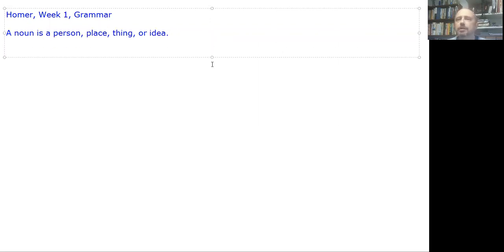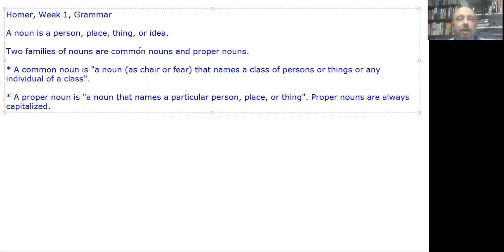You also need to know that there are two families of nouns, so to speak. These are common nouns and proper nouns. A common noun is, and I quote the dictionary here, a noun such as chair or fear that names a class of persons or things or any individual of a class.